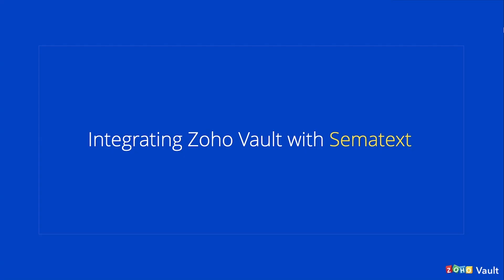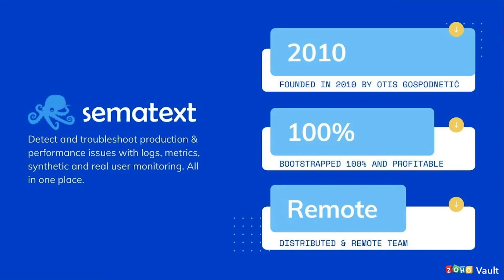Now I'll run you through a quick integration of Zoho Vault with Sematext. At Sematext we do observability — we basically help you detect and fix issues with your apps so you can build better products. The company was founded 10 years ago, is fully bootstrapped and profitable — just like Zoho — and our whole team is also fully remote. Let me jump into the actual demo and show you how Sematext works with Zoho Vault.